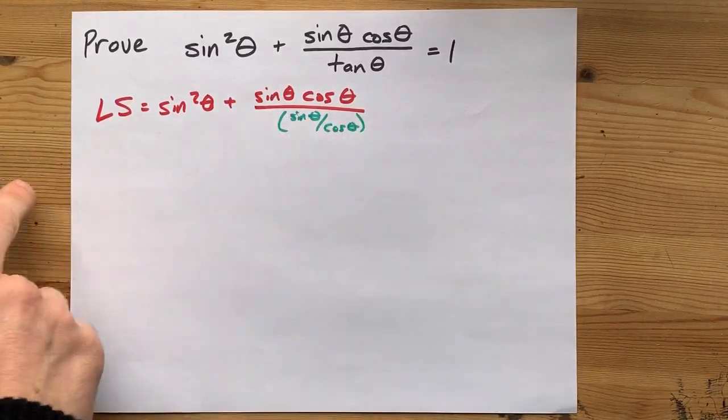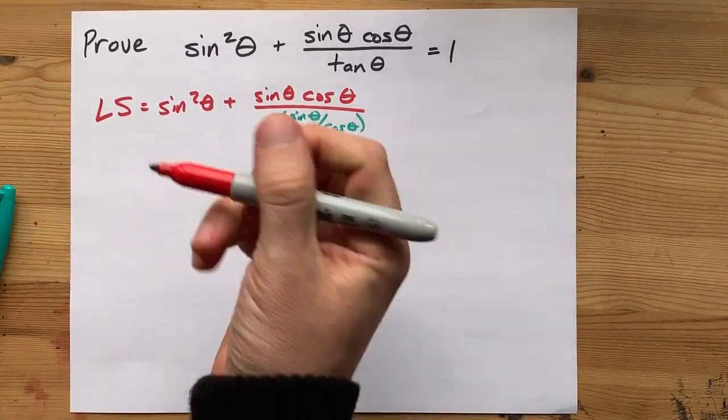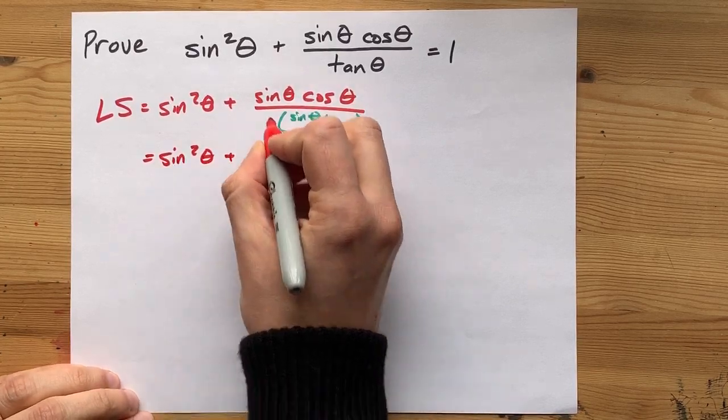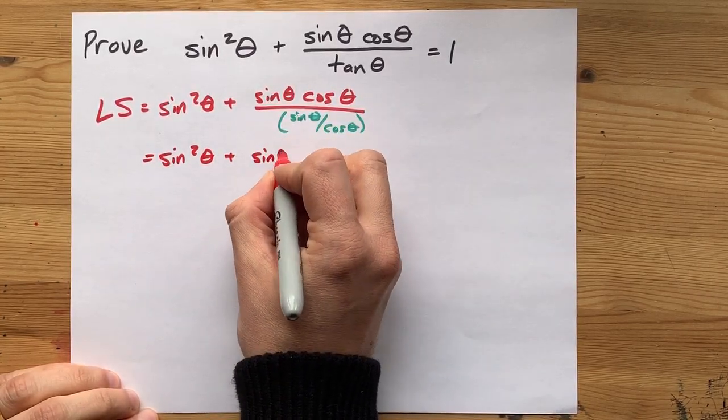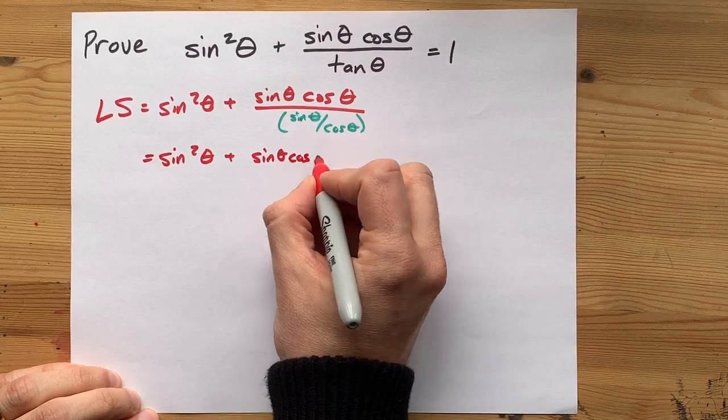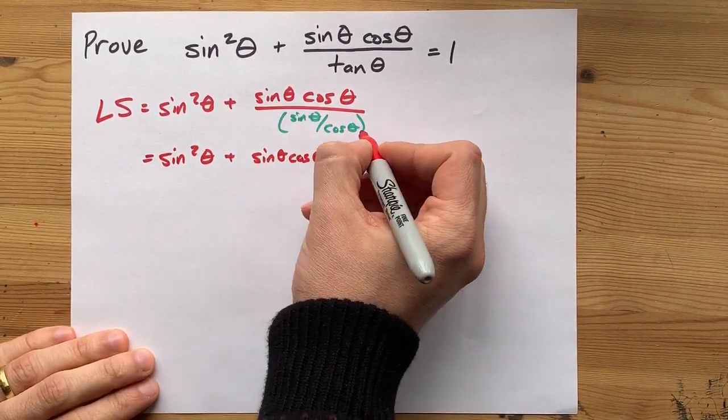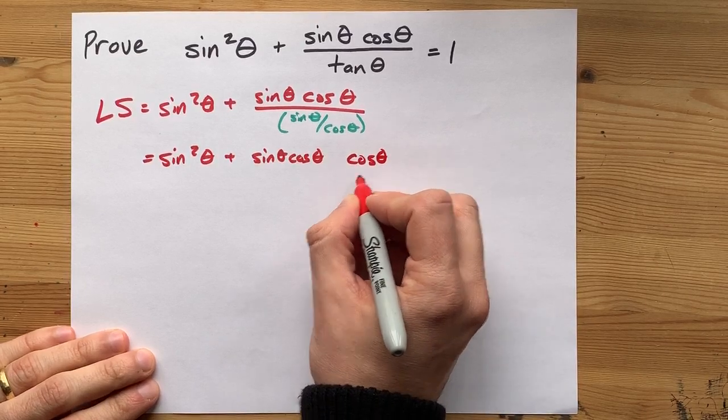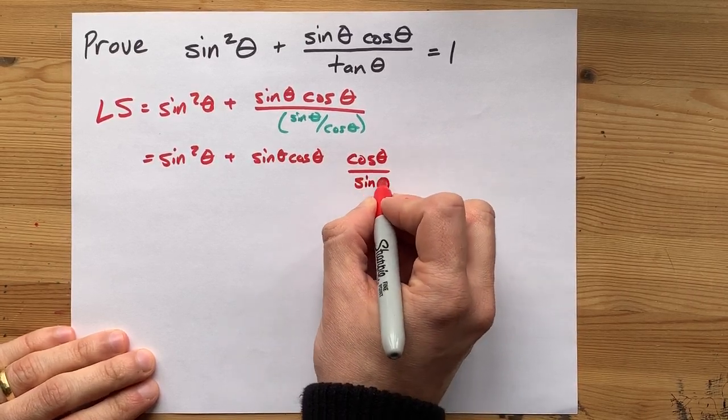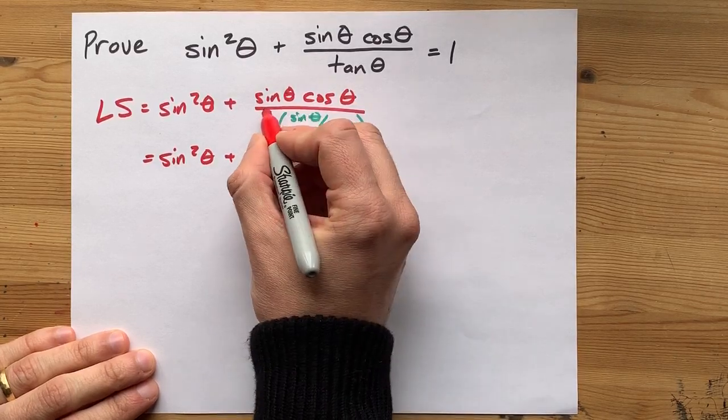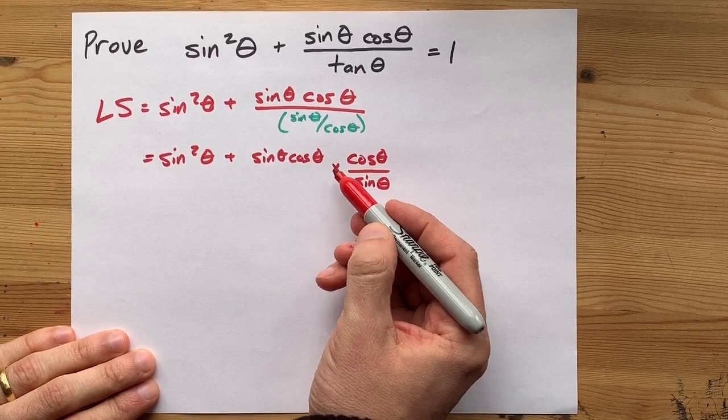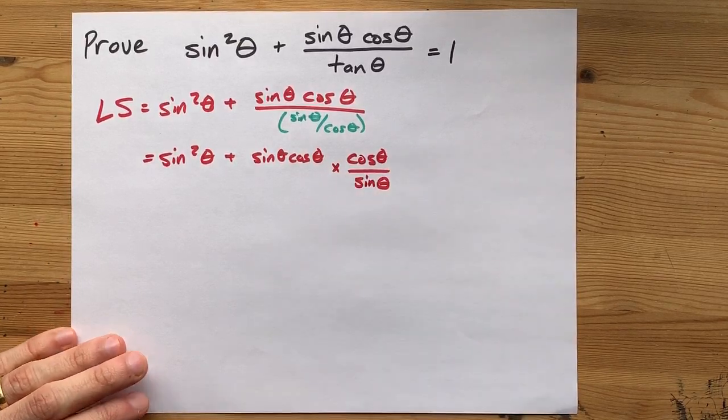Now I'm dividing by a fraction. Do you remember how to divide by fractions? I'm sure you do. You keep the thing that you're dividing the same, but the thing you're dividing by turns into its reciprocal. This becomes cos over sine instead of sine over cos. And the division becomes multiplication. Dividing by a fraction is the same as multiplying by its reciprocal.